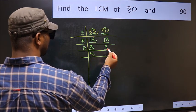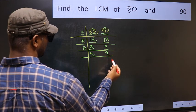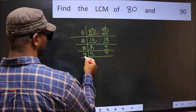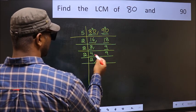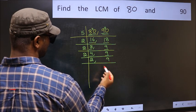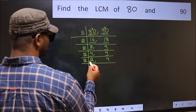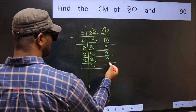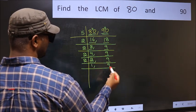The other number 9 is not divisible by 2, so we write it down as it is. Now we have 2 and 9. 2 in the 2 table: 2 times 1 is 2. The other number 9 is not divisible by 2, so we write it down as it is. Now we have 2 and 9 again — 2 is a prime number, 2 times 1 is 2. The other number 9 is not divisible by 2, so we write it down as it is.